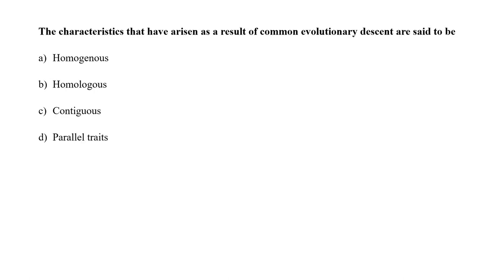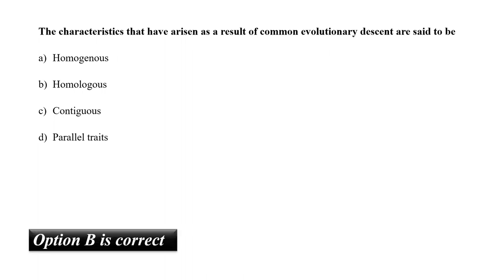The characteristics that have arisen as a result of common evolutionary descent are said to be A. Homogenous, B. Homologous, C. Continuous, or D. Parallel traits? Common evolutionary descent means common ancestry. The characteristics that have arisen as a result of common ancestry are called homologous characteristics. So the correct answer is option B.